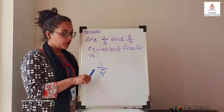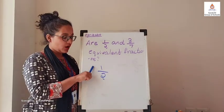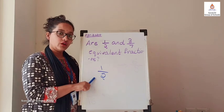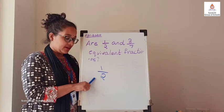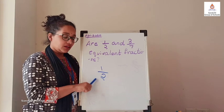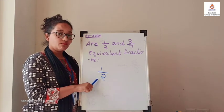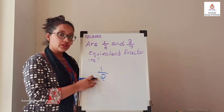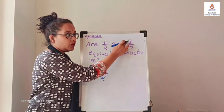Now children, look at this fraction: 1 upon 2. What do you think? By multiplying with which number you will be able to get 3 in the numerator?